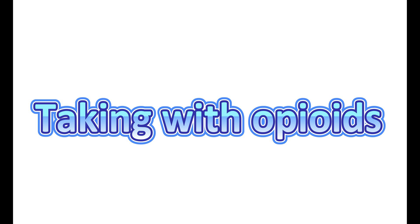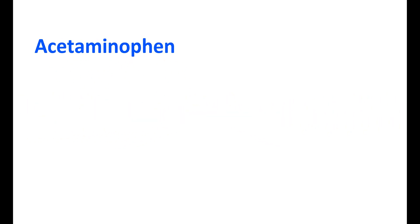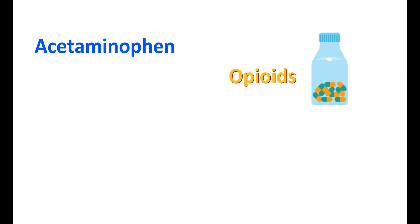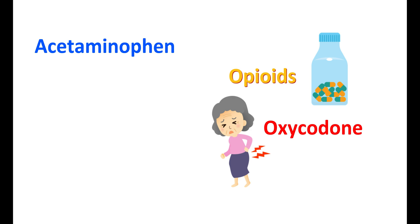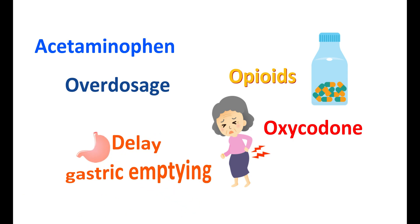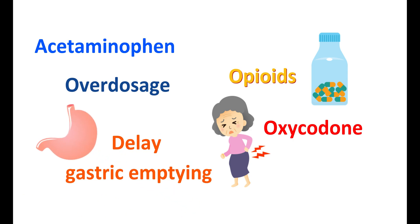Taking acetaminophen along with opiates: acetaminophen acts as a mild analgesic, but for people requiring a more potent analgesic effect, opiates such as oxycodone can be combined with it. However, this combination may also lead to the risk of acetaminophen overdose. Because opiates can delay gastric emptying, acetaminophen remains longer in the stomach, increasing its absorption. The net dose may thus increase, resulting in overdose. That is why the dose of acetaminophen is limited to 325 mg when combined with opiates.